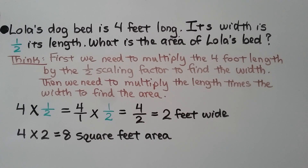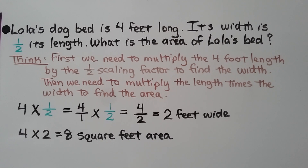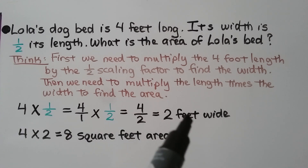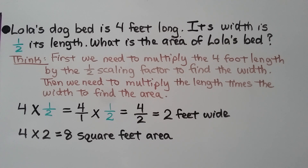Lola's dog bed is four feet long, and its width is half its length. What is the area of Lola's bed? We multiply the four-foot length by the half scaling factor: four times one-half equals two feet wide. So the bed is four feet by two feet. Four times two equals eight — Lola's bed has an area of eight square feet.